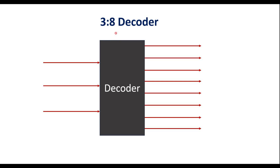In this video, I will discuss about the 3-to-8 decoder. In my previous lecture, we studied the 2-to-4 decoder. As we know, a decoder is a circuit which has n inputs and 2 power n outputs. Similarly, for a 3-to-8 decoder, we have 3 inputs and 8 outputs, since 2 power 3 equals 8.